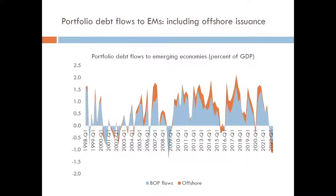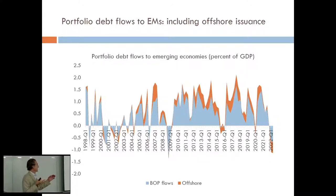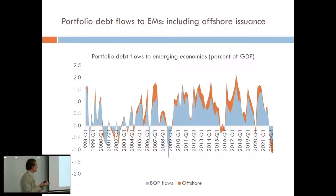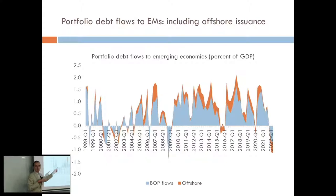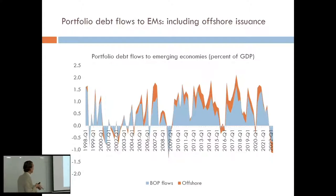I've drawn this picture: in blue is portfolio debt securities that you can download from the BOP, and in red you have net offshore issuance, which you can get from the BIS. Putting them on the same scale assumes that the offshore securities are bought by non-residents of the issuing country — which is generally correct but not certain. The reason I show you this picture is that there is a very strong co-movement between the two: net offshore issuance tends to be high during periods in which there is a lot of appetite for emerging market debt securities.